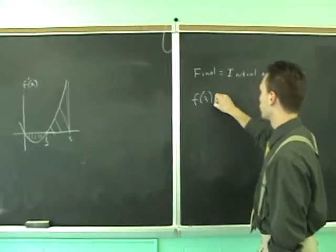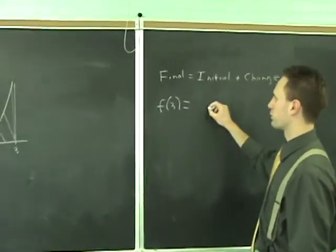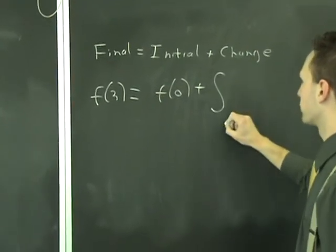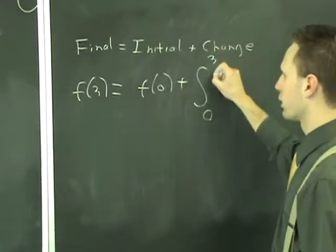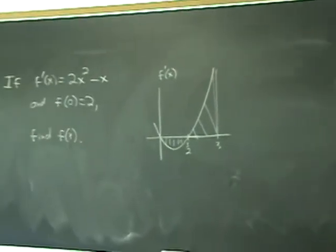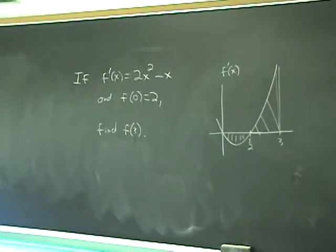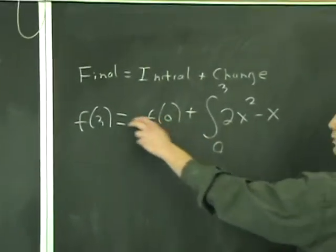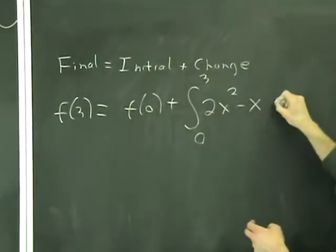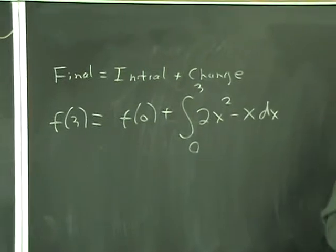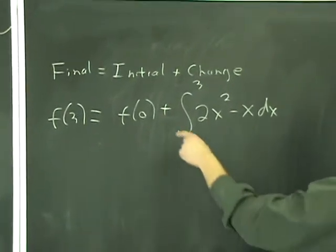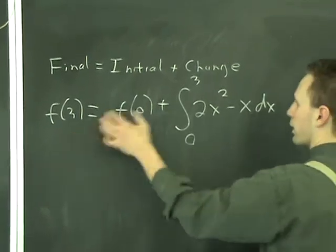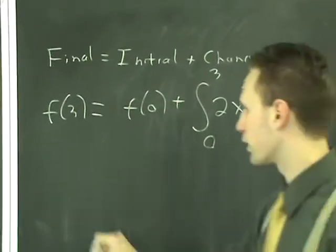The final value, f of 3, equals the initial value, which is f of 0, plus the change, which is the integral from 0 to 3 of the derivative that they gave you, 2x squared minus x. So, you work this out, right? And if you take this over to the other side, you just get the result that you got from the fundamental theorem of calculus, the anti-derivative of this function, evaluated and subtracted at the endpoints. Let's go ahead and work this out.